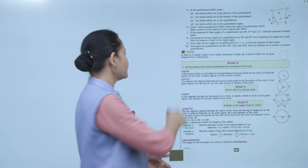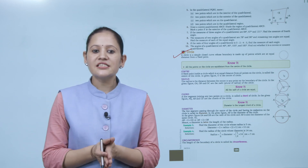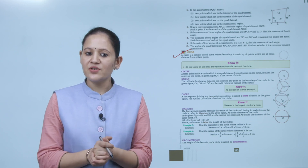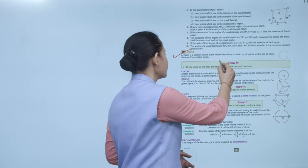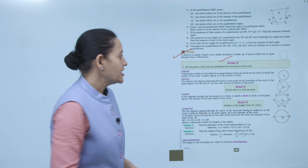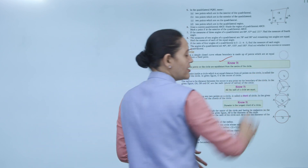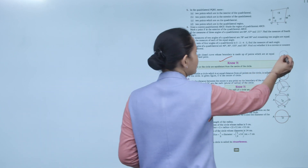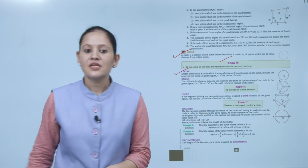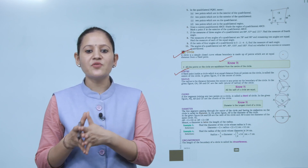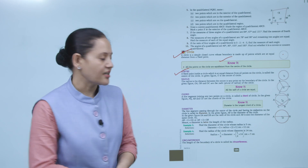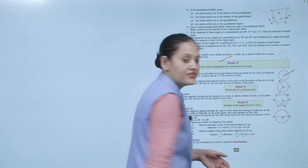Next is circle. A circle is a simple closed curve whose boundary is made up of points which are at equal distance from a fixed point. All points on the circle are equidistant from the center. The fixed point inside the circle which is equidistant from all points on the circle is called the center. In the figure, O is the center of the circle.